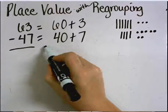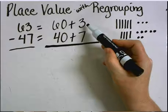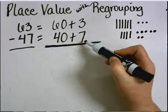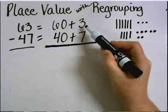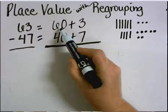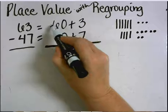Now I'm ready to show my subtraction. Starting in the ones place, 3 subtract 7. I know I can't do this because I don't have enough ones with the 3. I need to borrow from the tens place.